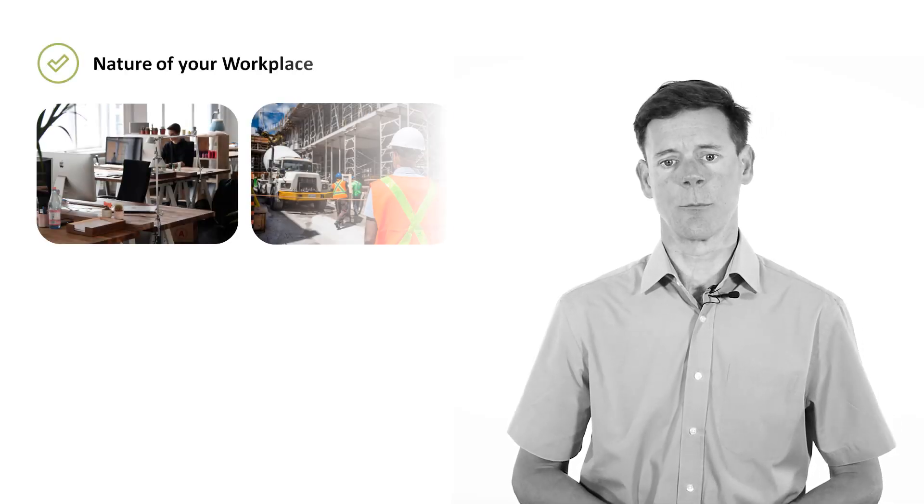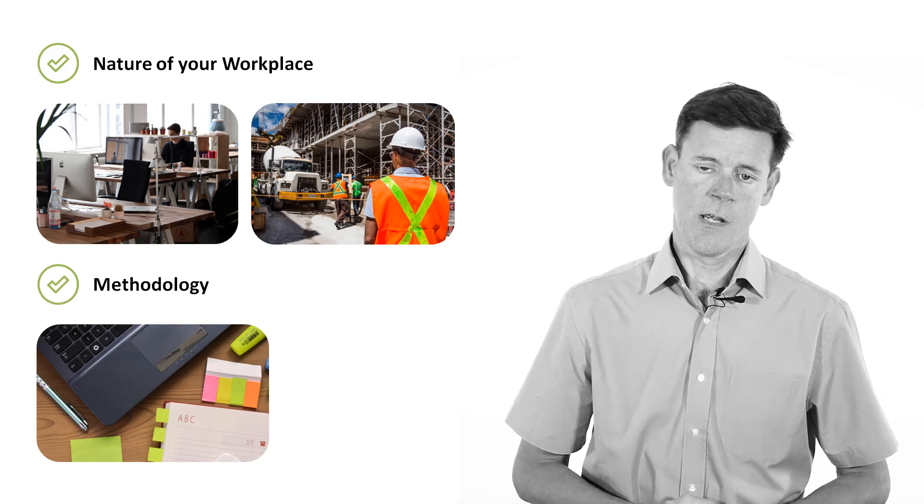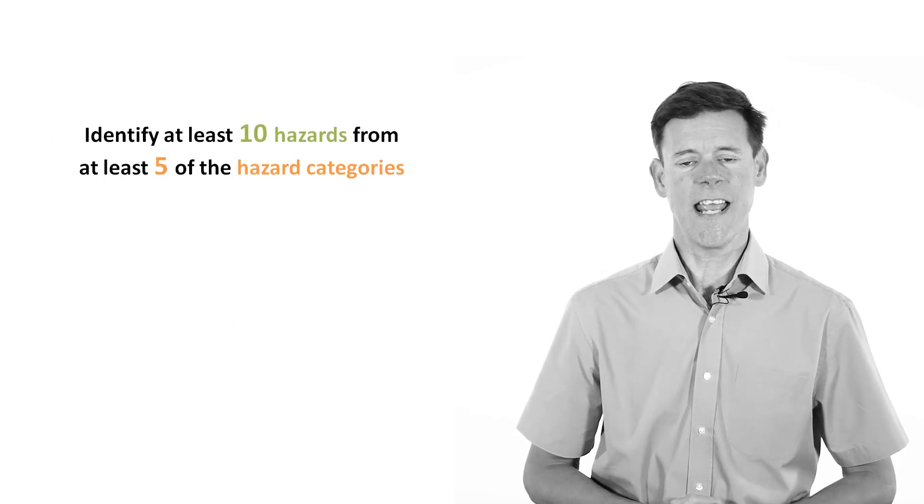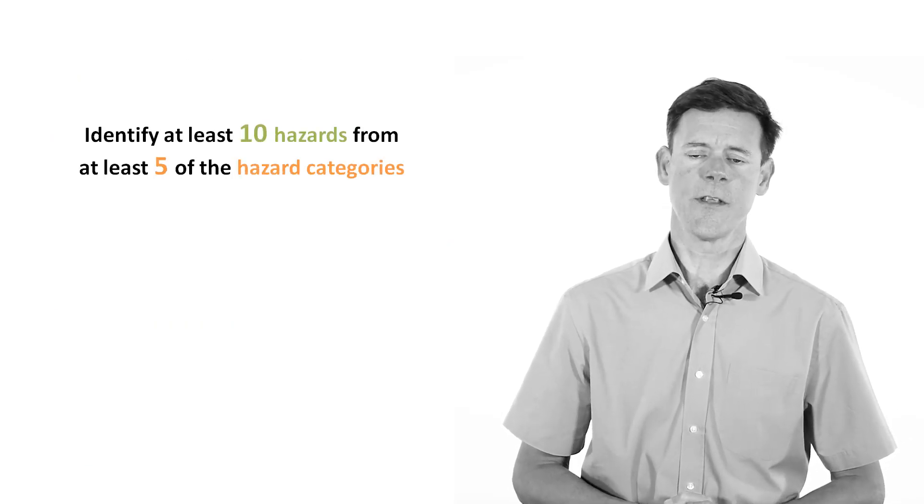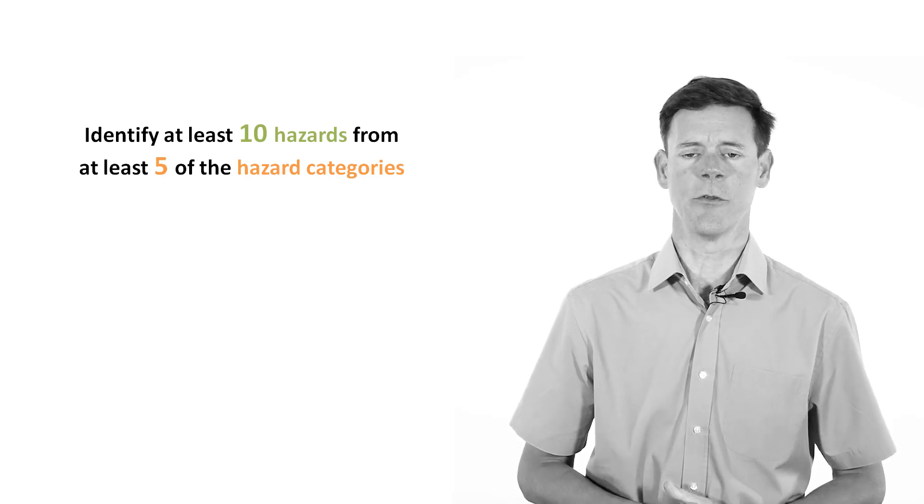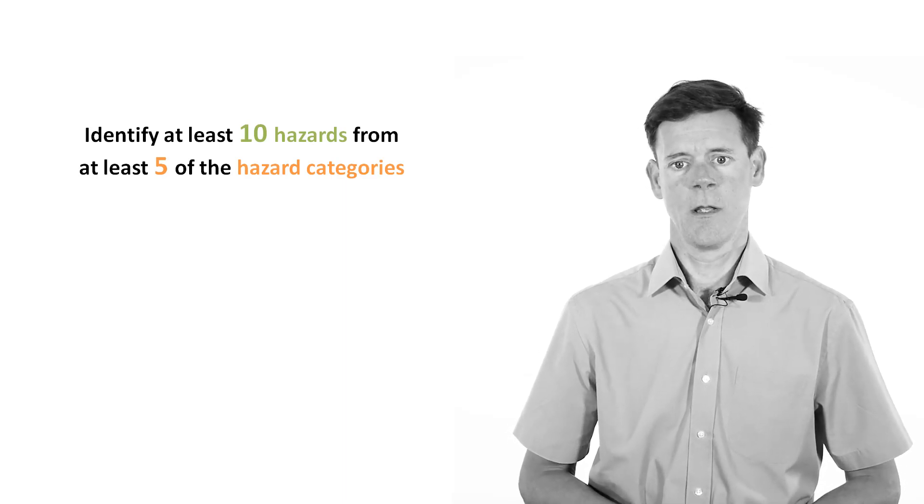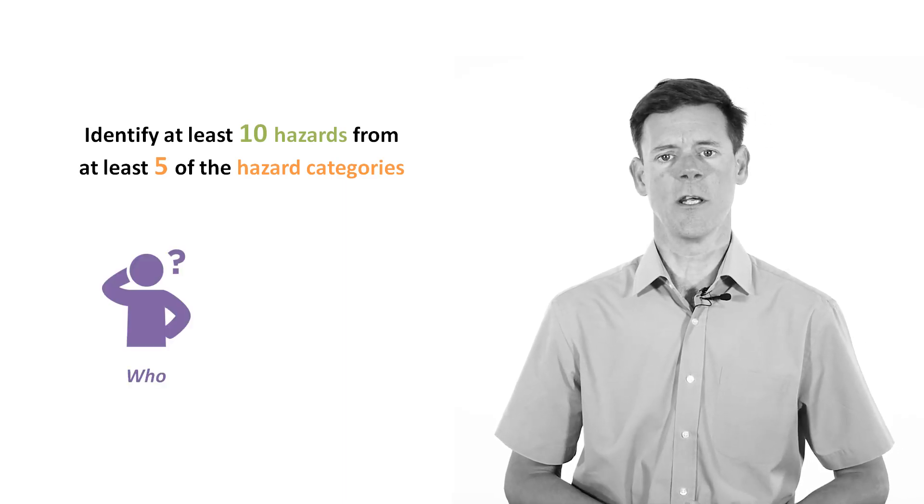At the start of the assessment, you have to explain the nature of your workplace and the methodology used. You then have to identify at least 10 hazards from at least 5 of the hazard categories covered in elements 5 to 11. You have to briefly explain who might be harmed and how.